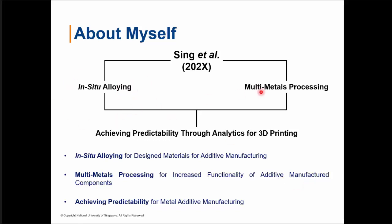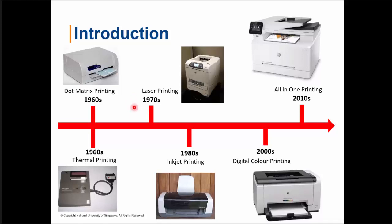Why in-situ alloying? If we look at the development of traditional desktop printers, the technological advances over the years started from very simple, low-resolution printing such as dot matrix printing. As the knowledge improved, the resolution improved as well — then you had laser printing, inkjet printing, and followed by digital color printing where you can print documents in multiple colors configured using computer software.